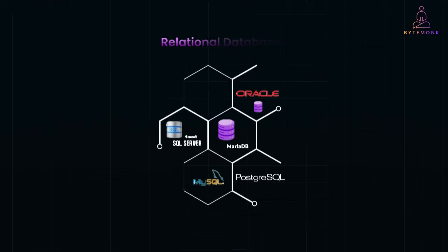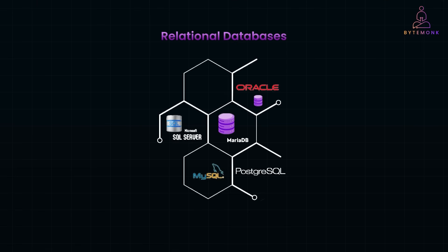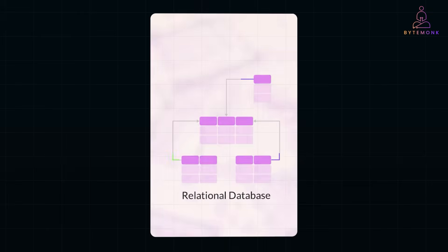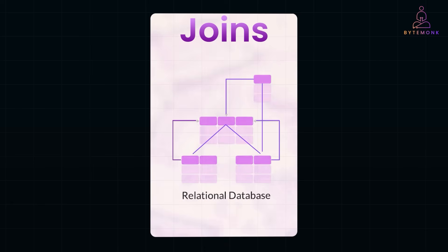Among these, relational databases are the most widely used. They organize data into structured tables, often splitting it across multiple tables to avoid redundancy and keep things tidy. This is where joins come into play. Joins allow you to combine data from these tables using a common link, like a user ID, making it easy to fetch meaningful insights. In the world of relational databases, joins are the glue that holds your data together, making them an essential skill for anyone working with data.